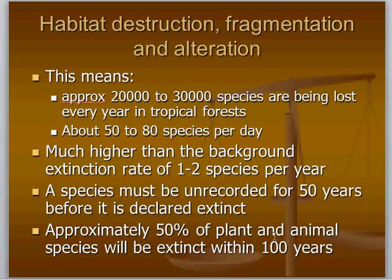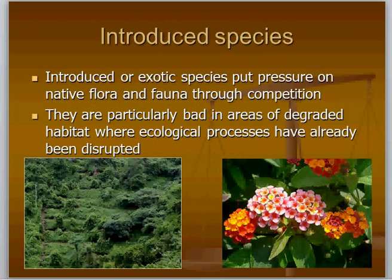Habitat destruction is not the only way in which species are being driven to extinction. Other reasons are introduced species, over-harvesting, and pollution — they form the evil quintet. Introduced species are basically species which have been moved around the surface of the Earth by humans, introduced in an area where they are not native to the ecosystem, and those species will tend to drive out the native species. Introduced species put pressure on the native flora and fauna through competition and drive them out.